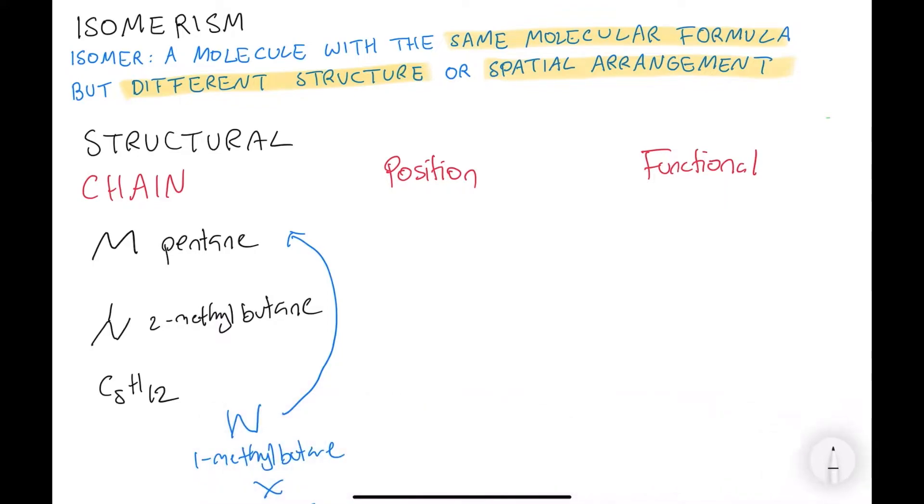Okay, moving on. So position structural isomerism is where the position of the functional group changes. Could be like the double bonds or, for my example, I use chlorine.